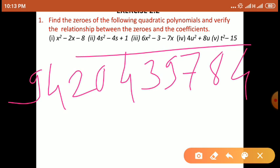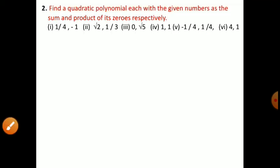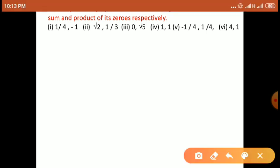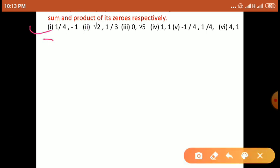Now we are going to study example number 2. Your example number 2 is: find a quadratic polynomial, each with the given numbers as the sum and product of its zeros respectively. इसका मतलब यहाँ पर जो पहले दो numbers दिए गए हैं — उसमें से पहला number sum of zeros है, and it is denoted by S, and it is given 1 by 4. And product of zeros, it is denoted by P, and it is given minus 1.